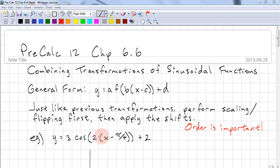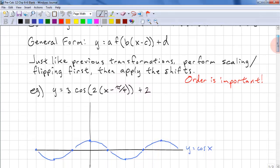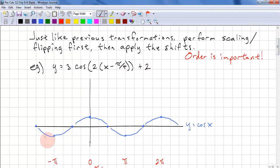So let's go through an example. y equals 3 times cos of 2 of x minus pi over 4 plus 2. So here we have our regular cosine function. And the first thing we'd like to do is do our scaling first.